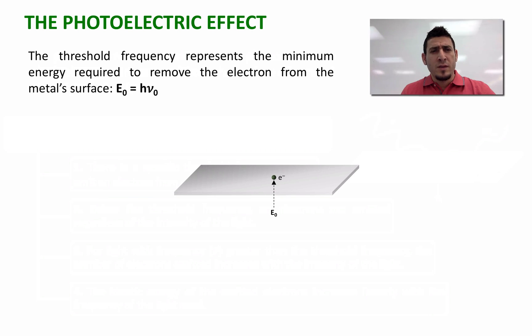Now the threshold frequency represents the minimum energy required to remove the electron from the metal surface. So this energy is represented as E₀, that is equal to h multiplied by the frequency ν₀, where h is Planck's constant.